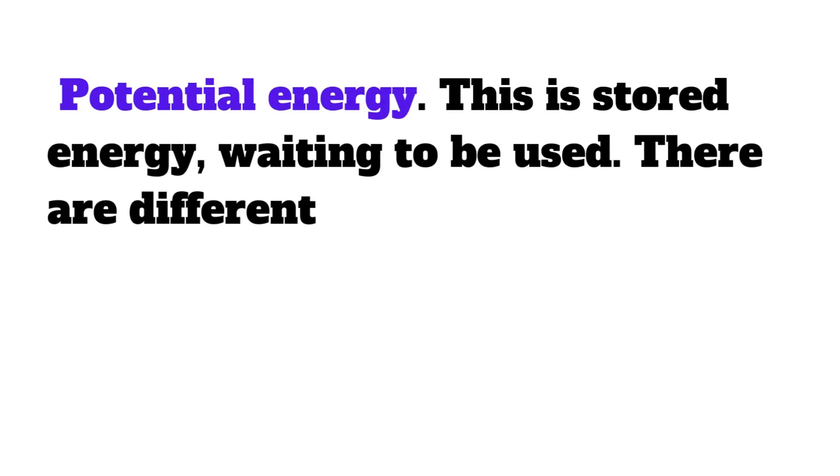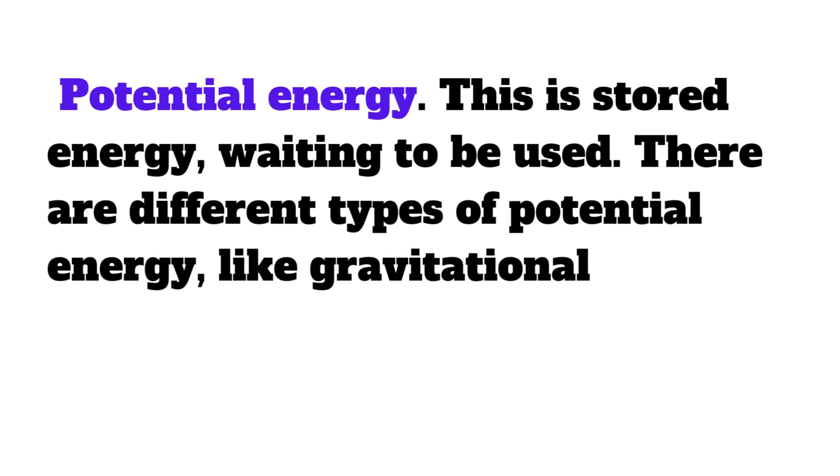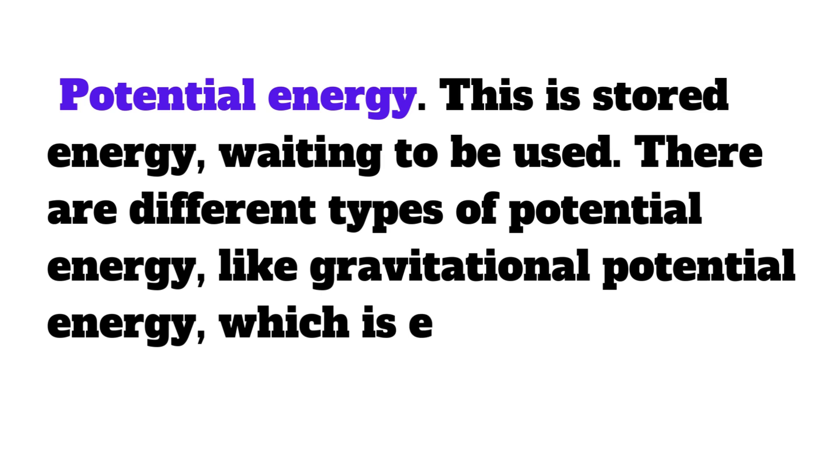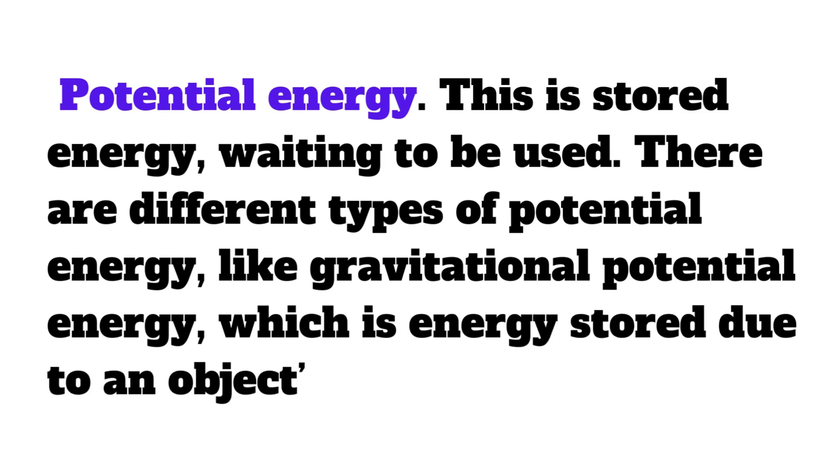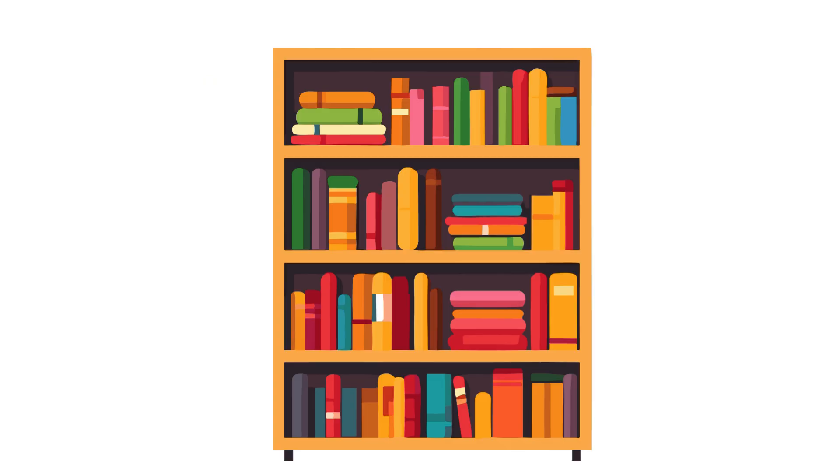Next up is potential energy. This is stored energy, waiting to be used. There are different types of potential energy, like gravitational potential energy, which is energy stored due to an object's height. For example, a book on a shelf has gravitational potential energy.